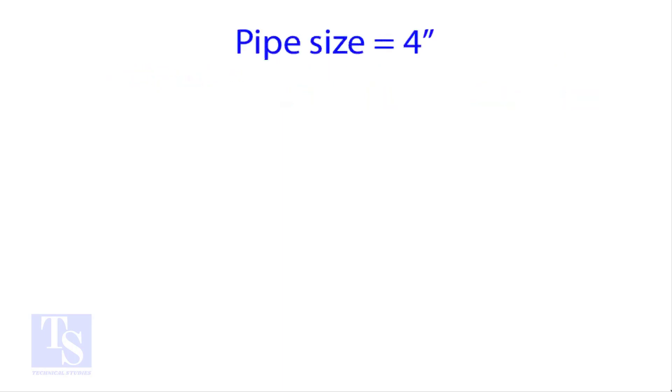Let us try an example. Calculate the cutback of a 4 inch pipe with 4 cuts. OD of a 4 inch pipe is 114 millimeters.